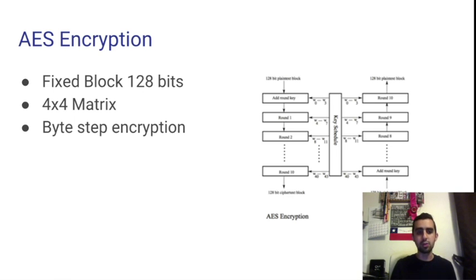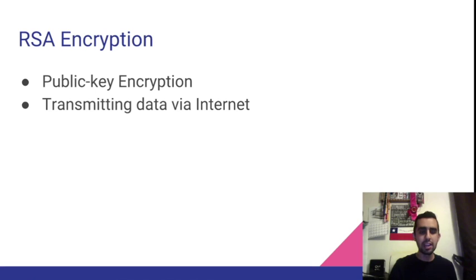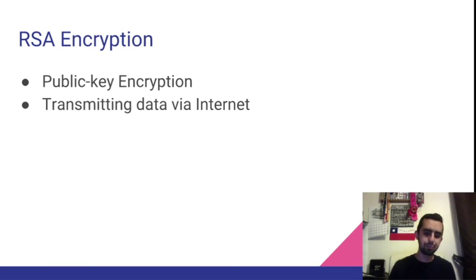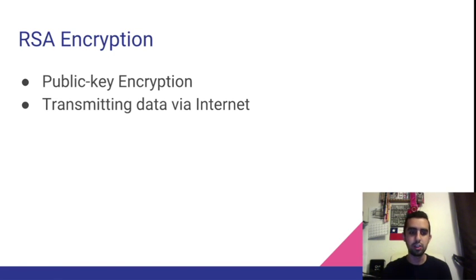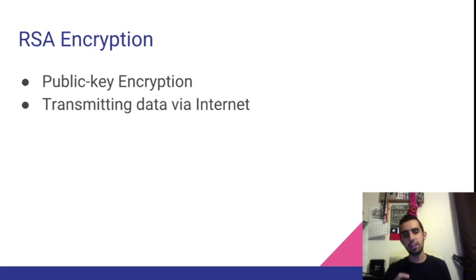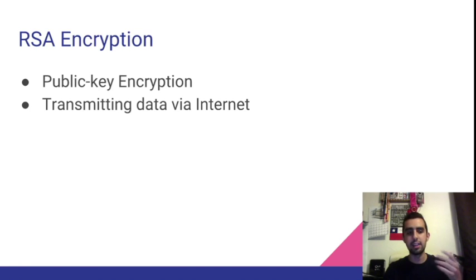Parallel to AES encryption, we have RSA encryption. RSA uses a form of encryption that relies on two keys: one is public and the other is private. You need this form of encryption to transmit data via the internet. The public key is given out to the general public and all users, while the private key is kept to yourself. The end user gets the public key, encrypts their data, and sends it to you. With your private key, you're able to decrypt that data. And when you send information back, you encrypt it with your private key, and it can be decrypted with the user's public key.